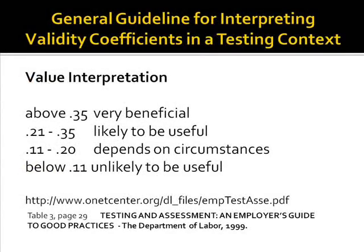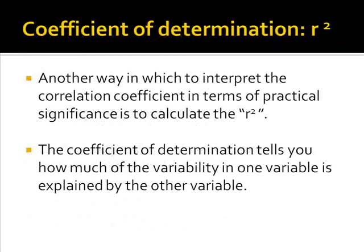Here is one way of determining the practical significance for the correlation coefficient. This approach to determining the value, or practical significance, is provided by the Department of Labor. The coefficient of determination, or r squared, is a way to interpret the correlation coefficient in practical terms. The coefficient of determination tells you how much of the variance in one variable is associated with, or explained by, some other variable.